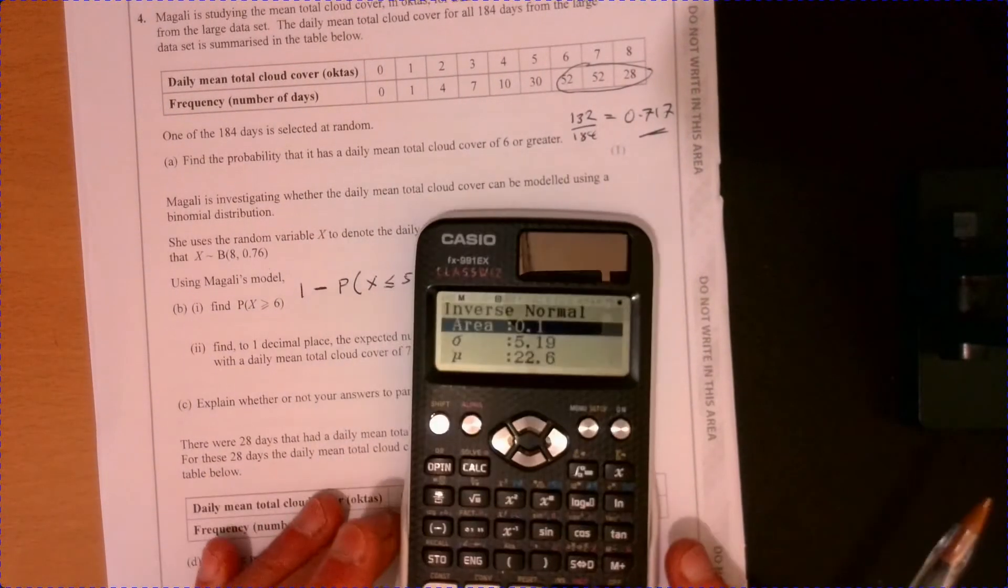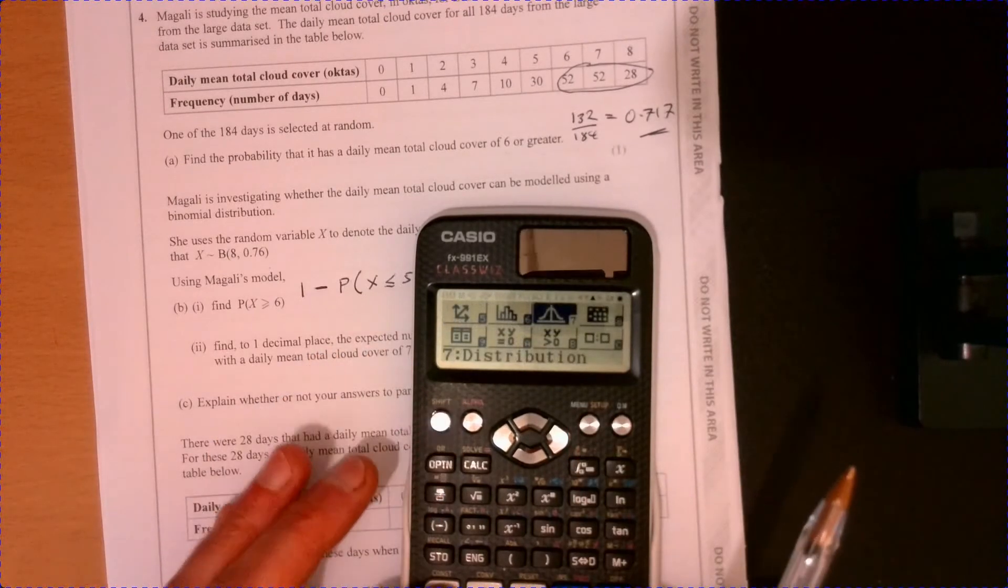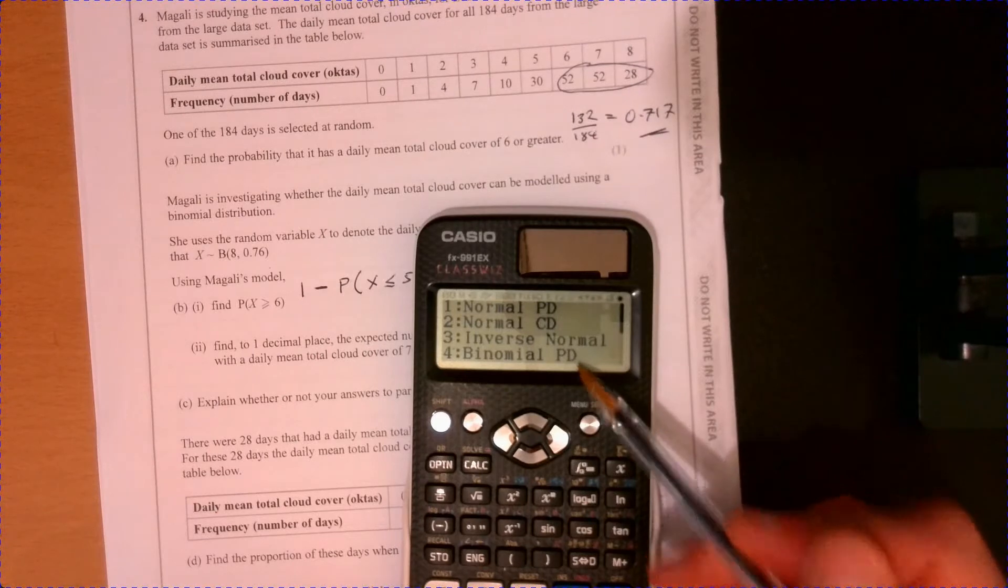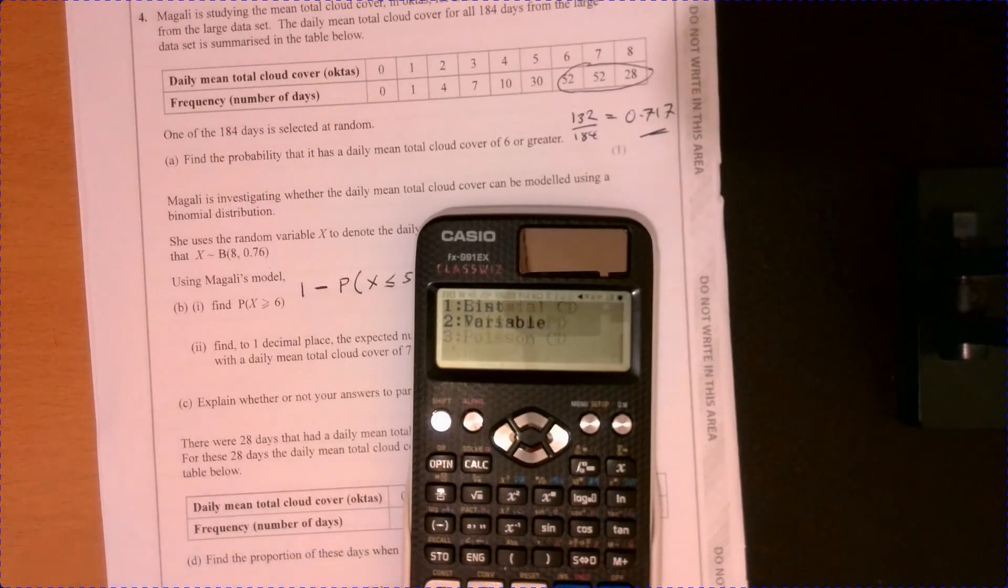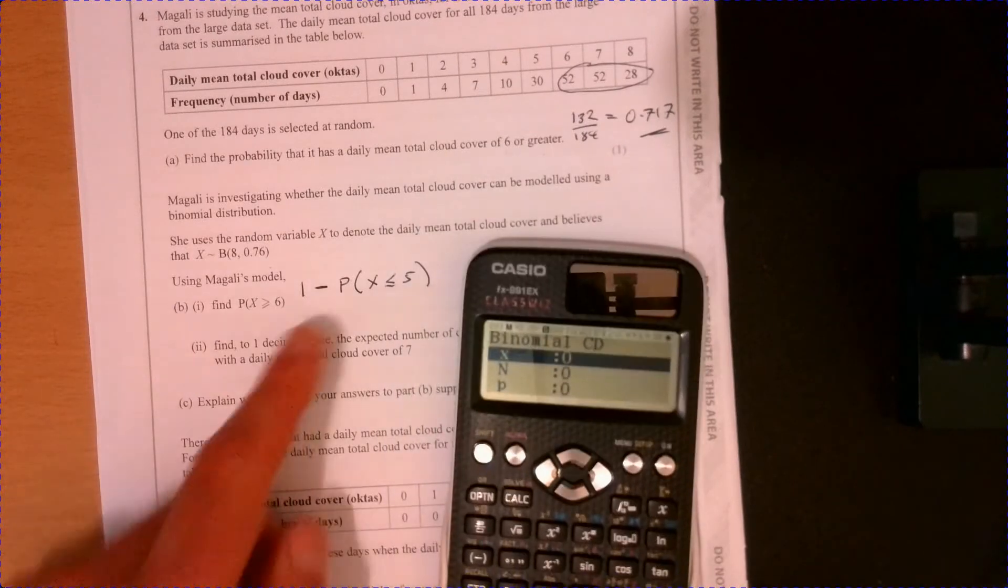So just having a look at our calculator. I'm going to pick not binomial PD, binomial CD. Okay, so I'm going to pick number one there. And let's just go, I always pick number two as an option because I only want one answer here.